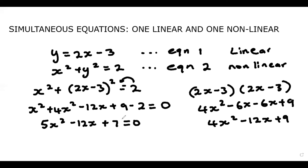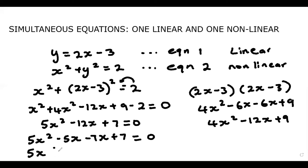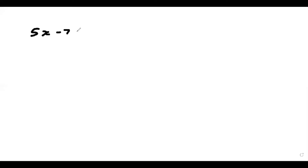Now we have a quadratic, and we can solve that using the AC method. So 5 times 7 gives us 35, and two factors that would give us minus 12 would be minus 7 and minus 5. So we have 5x squared minus 5x minus 7x plus 7 is equal to 0. We factor out 5x, so we have x minus 1, minus 7, times x minus 1, equal to 0.